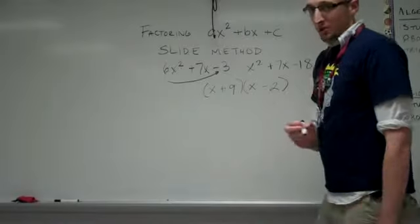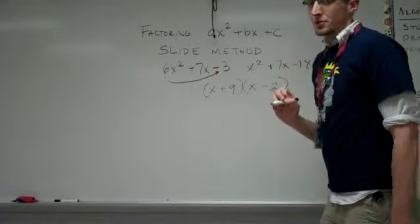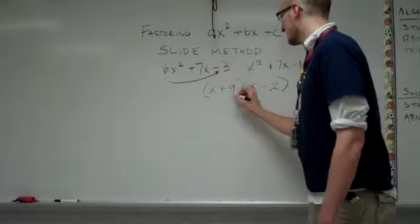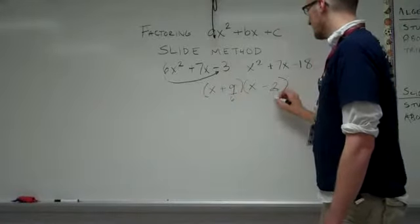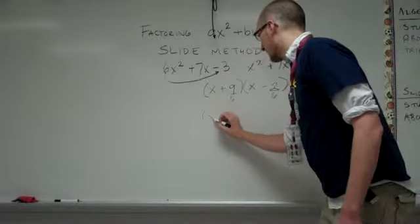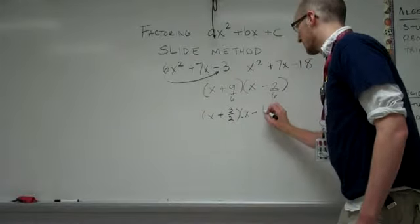Now, the interesting part comes in right here. Divide both of those factors by the a value. So that's 9 over 6 and 2 over 6. Now simplify. We have x plus 3 over 2 and x minus 1 third.